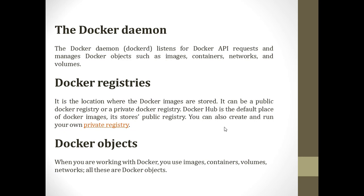The Docker daemon, or dockerd, listens to different Docker objects — these can be an image, a container, different volumes, or networks. It also listens to API requests generated by Docker. After this comes the registries component, also called Docker Registry. This is the location where Docker images are stored. Docker Hub lies within Docker registries and is responsible for storing the public registry. We can also store private images within these registries.